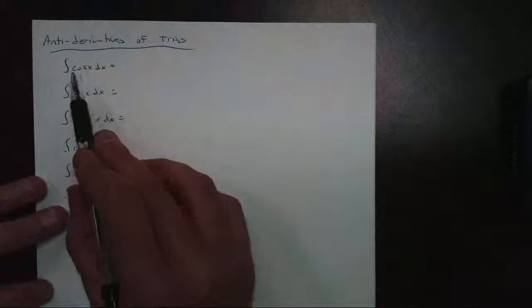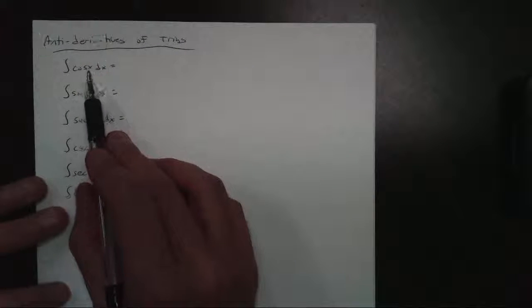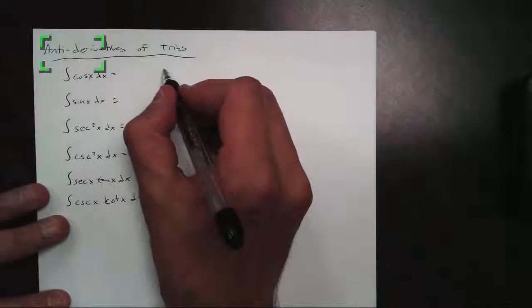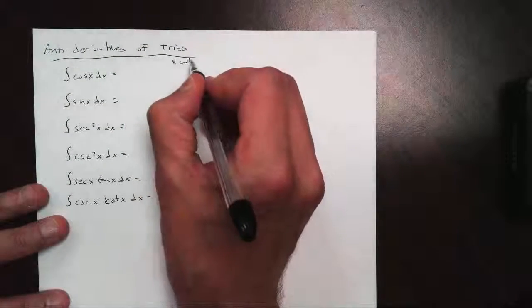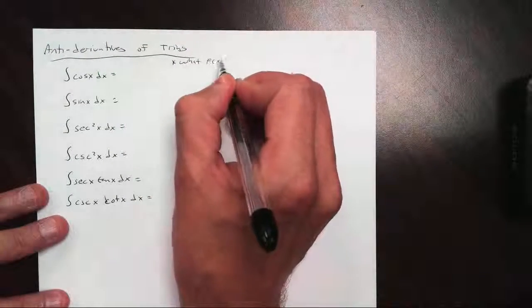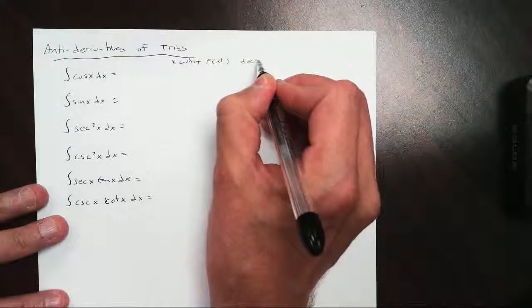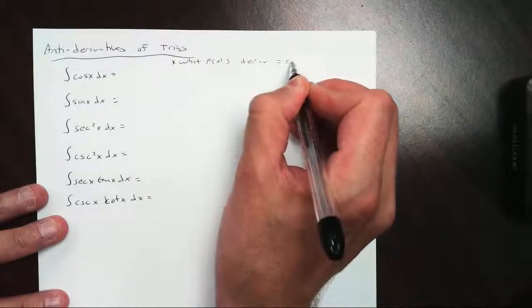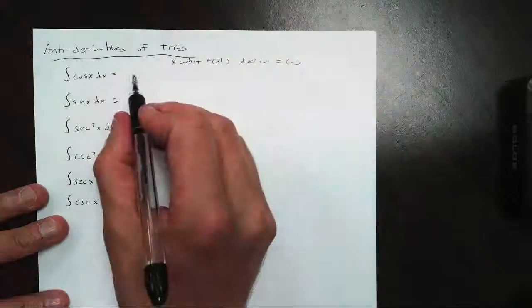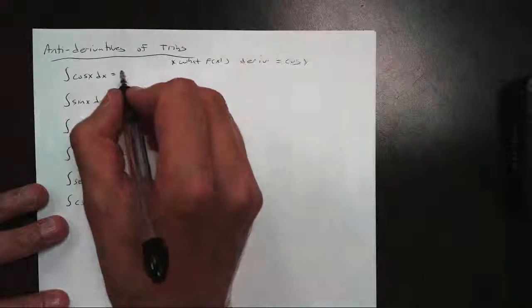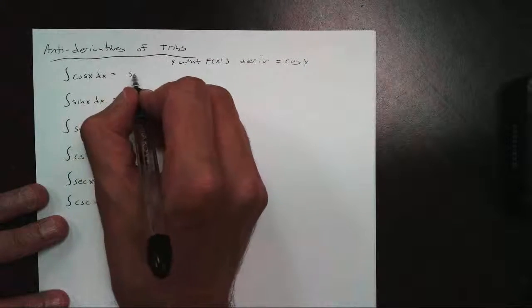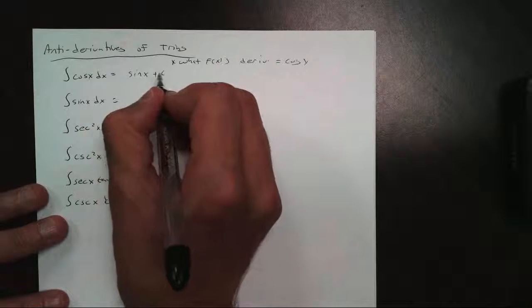I'm looking for, like this one here, I'm looking for what function's derivative is cosine, and that's what this is saying. What function's derivative is cosine? And of course, we know that is sine of x. So this just becomes sine of x plus your constant.